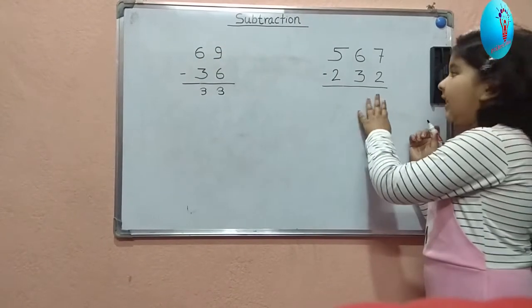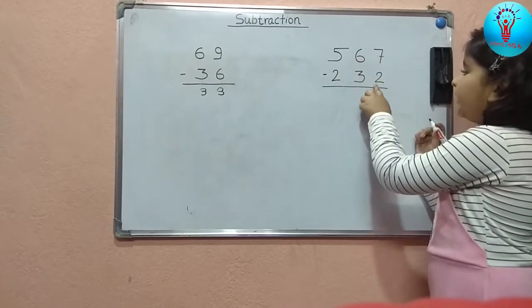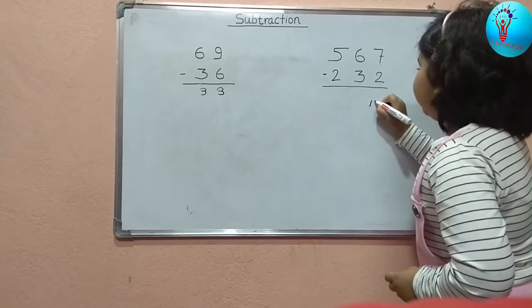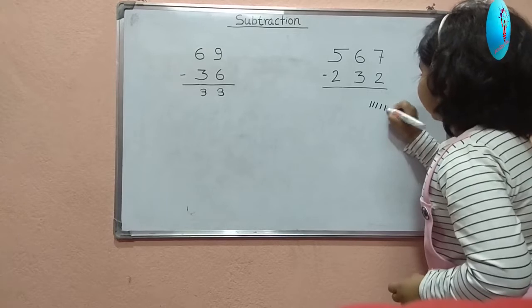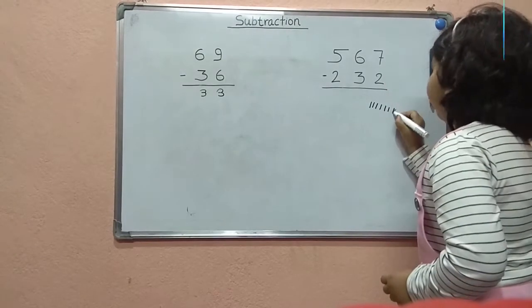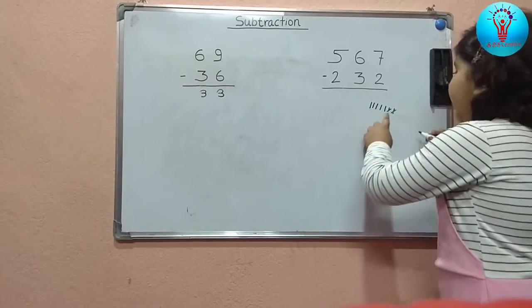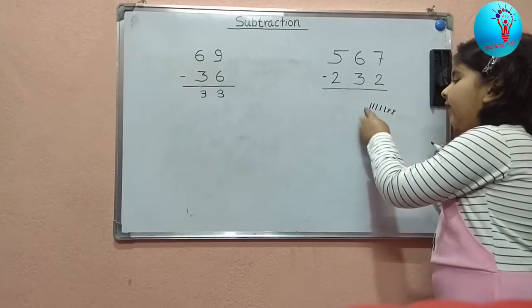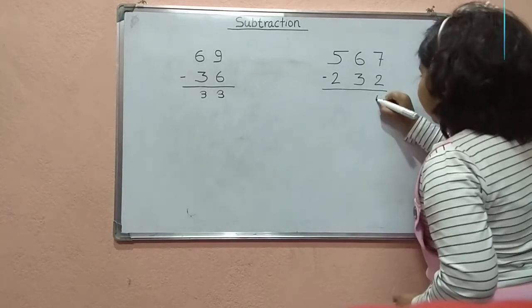Now let's do another one. 7 minus 2 is how much? We need to do rough. 1, 2, 3, 4, 5, 6, 7. And how much we need to cut? 2. 1, 2. And the answer is how much? 1, 2, 3, 4, 5. Means the answer is 5.